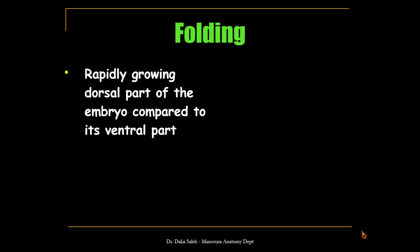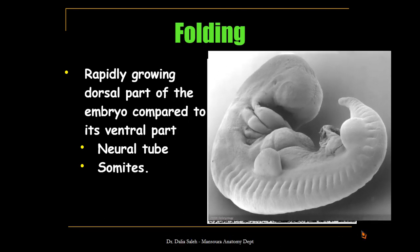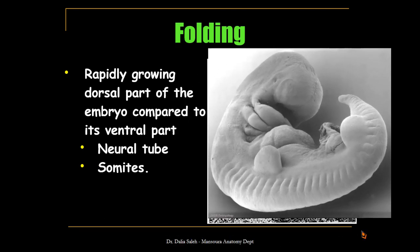There is a rapidly growing dorsal part of the embryo compared to its ventral part, because of the development of the neural tube and the somites on each side of it. This is an electron microscopic picture so you can see the somites — these are blocks of tissue on each side of the neural tube. Because these two structures are rapidly growing, the embryo is forced to bend ventrally in a craniocaudal direction.